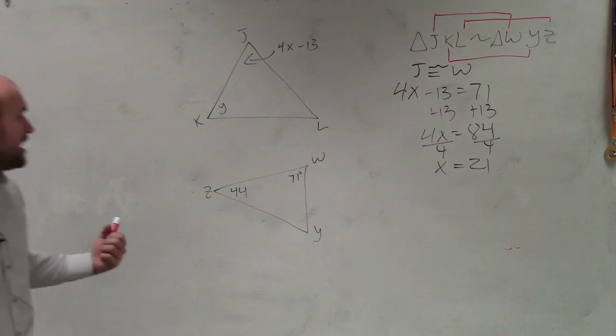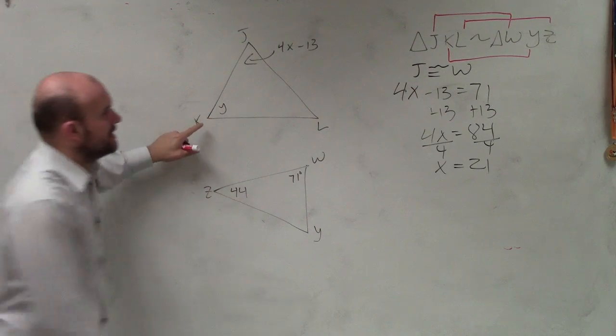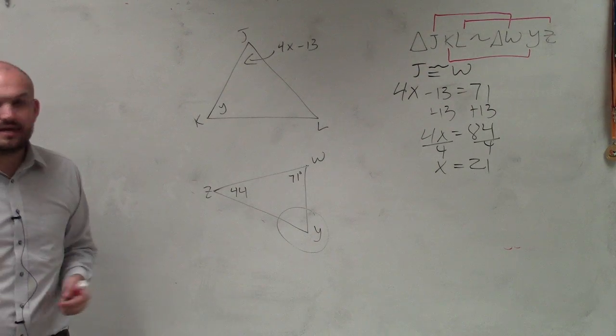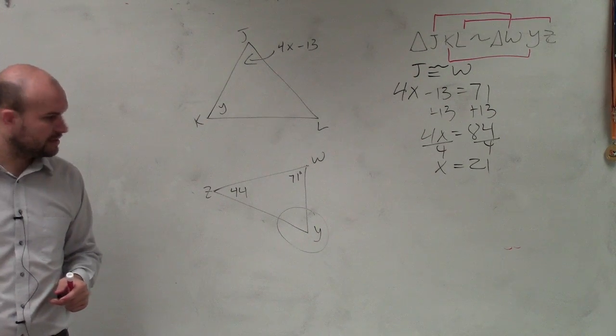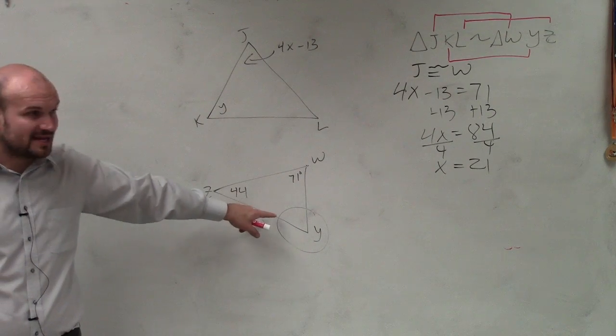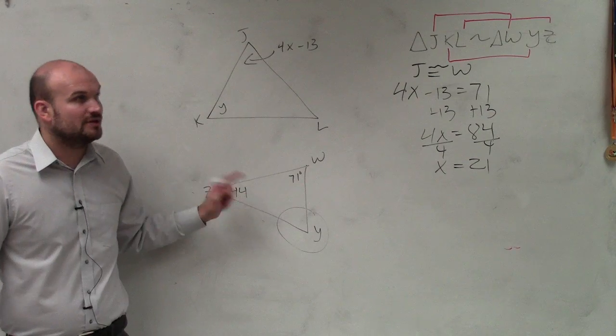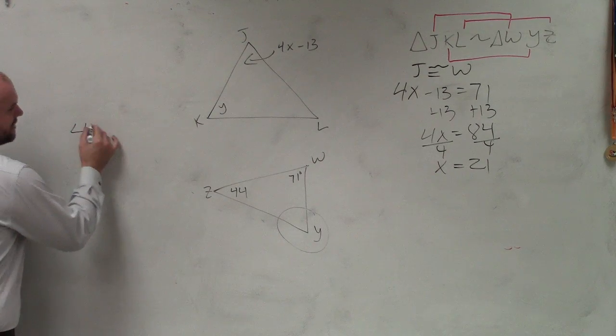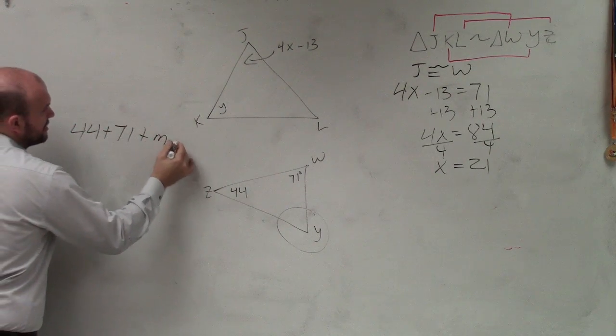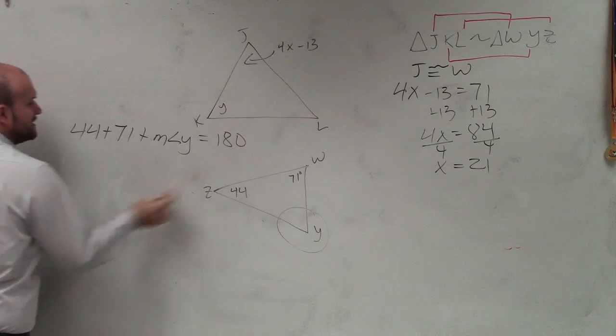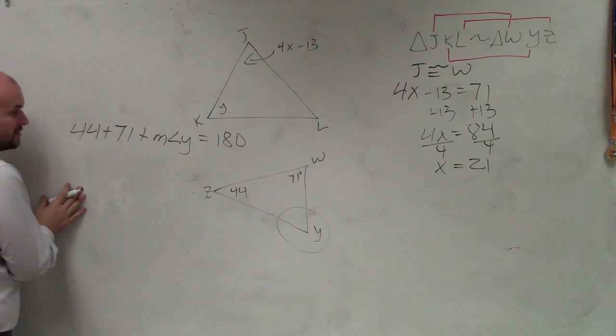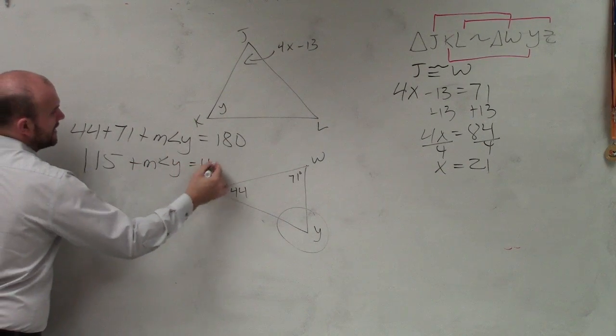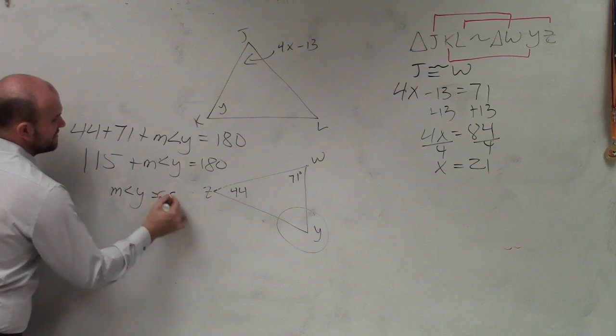Now I need to figure out K. So I look at K corresponds to Y. But we notice we don't have that angle, do we? So I don't know what that angle is. But I do know I have two other angles. And I know that all the angles in a triangle add up to 180. So therefore I can say 44 plus 71 plus the measure of angle Y equals 180 degrees. Add these two up, which is going to be 115 plus the measure of angle Y equals 180. Measure of angle Y equals 65 degrees.